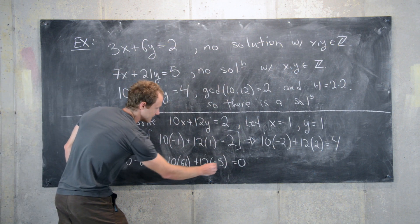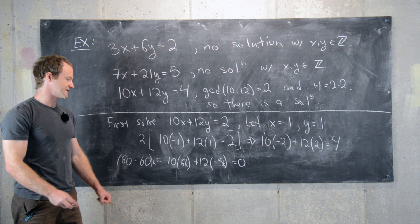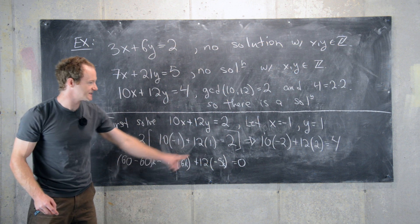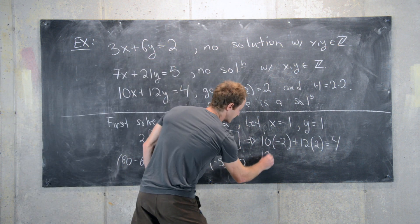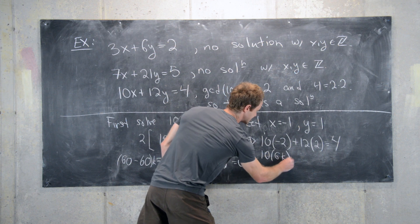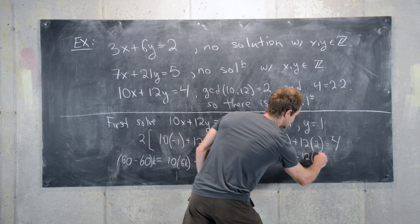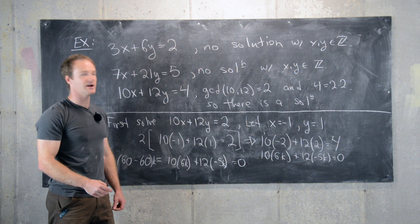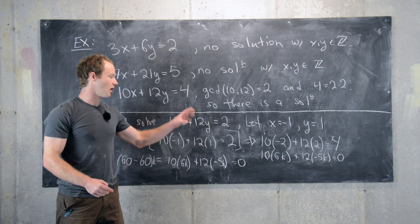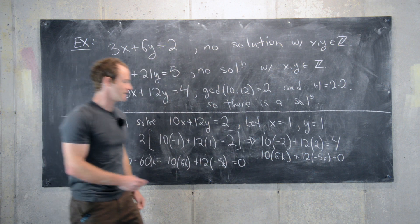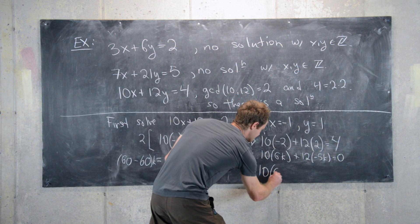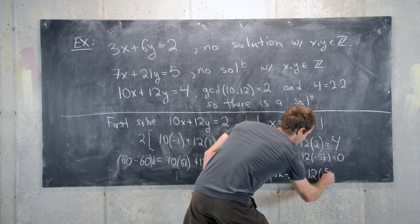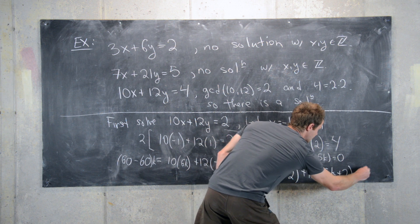Since this equation is true, we can also multiply it by k. So 0 times k is 0. We have 10 times 6k plus 12 times negative 5k equals 0. And now what we can do is take this equation and add it to our equation. This gives us an equation that represents a family of all solutions to our original equation.